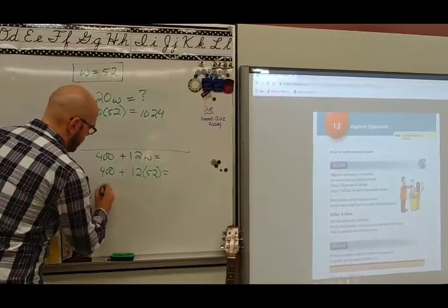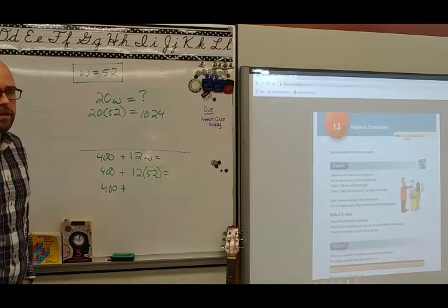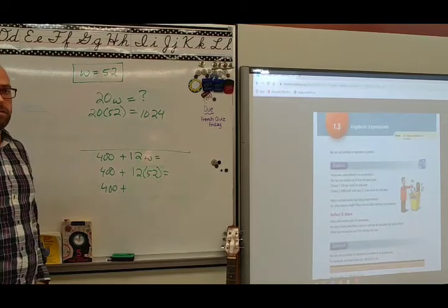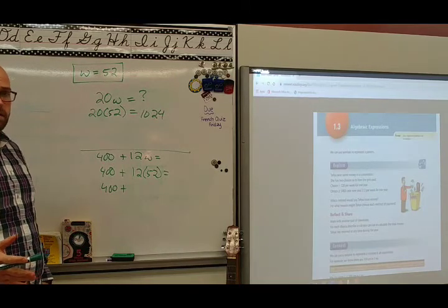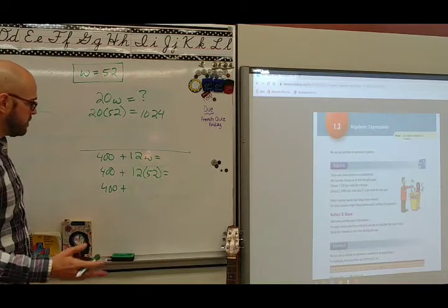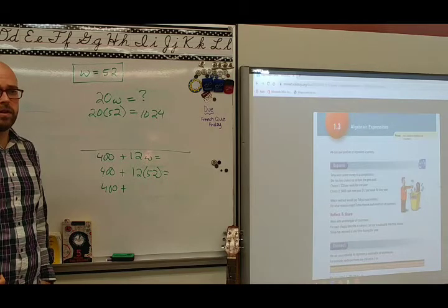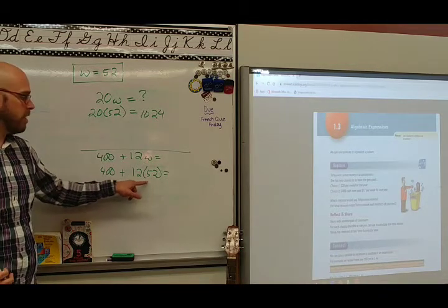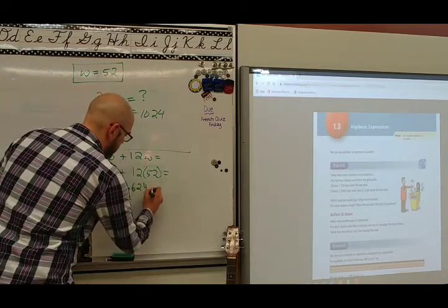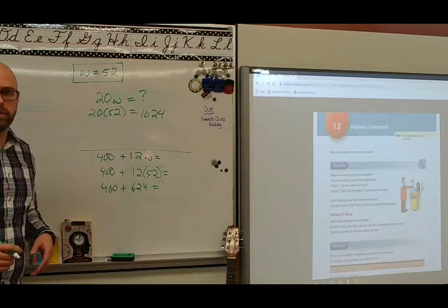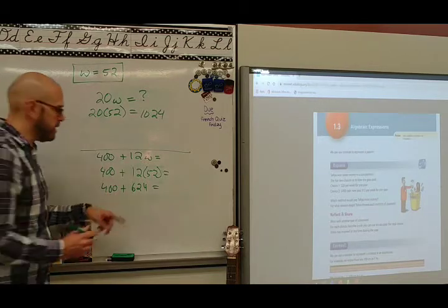400 plus 12 times 52. Well, I know that 10 times 52 is 520. And I could also say, I know 12 times 50 is 600. I also know 12 times 2 is 24. So there's a few ways you can go at it. So it looks like, what, 624? What's 400 plus 624? Call it out. 1,024. 400 and 600 is 1,000 plus the 24.